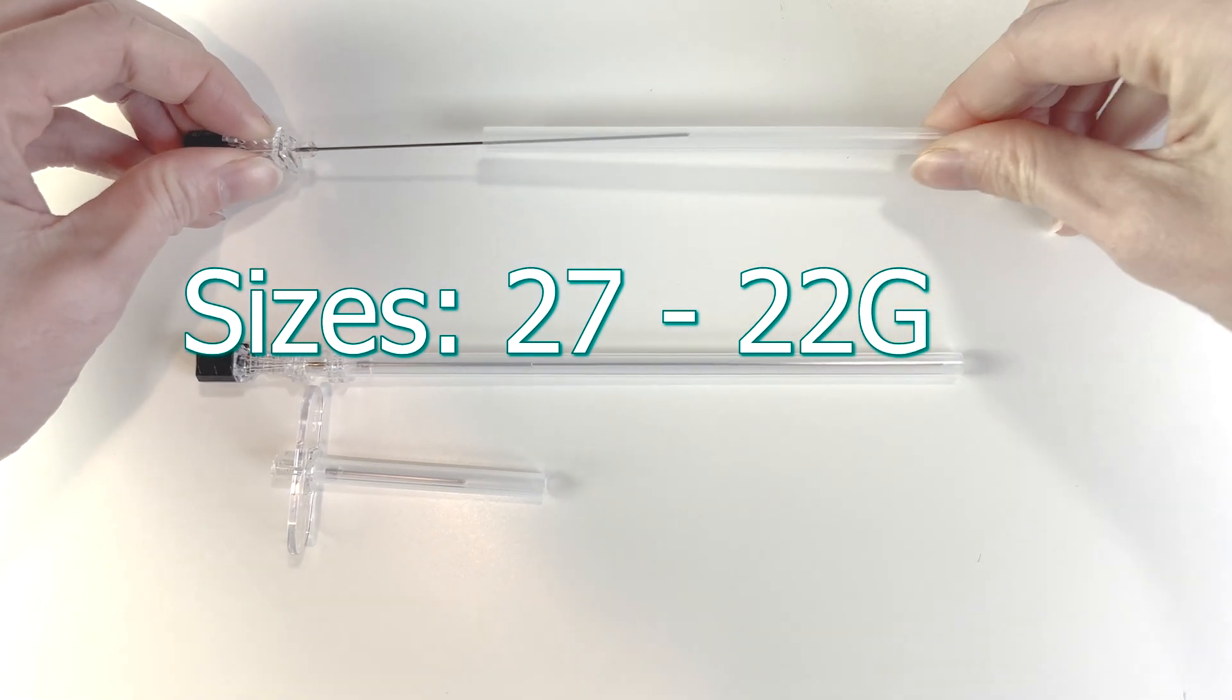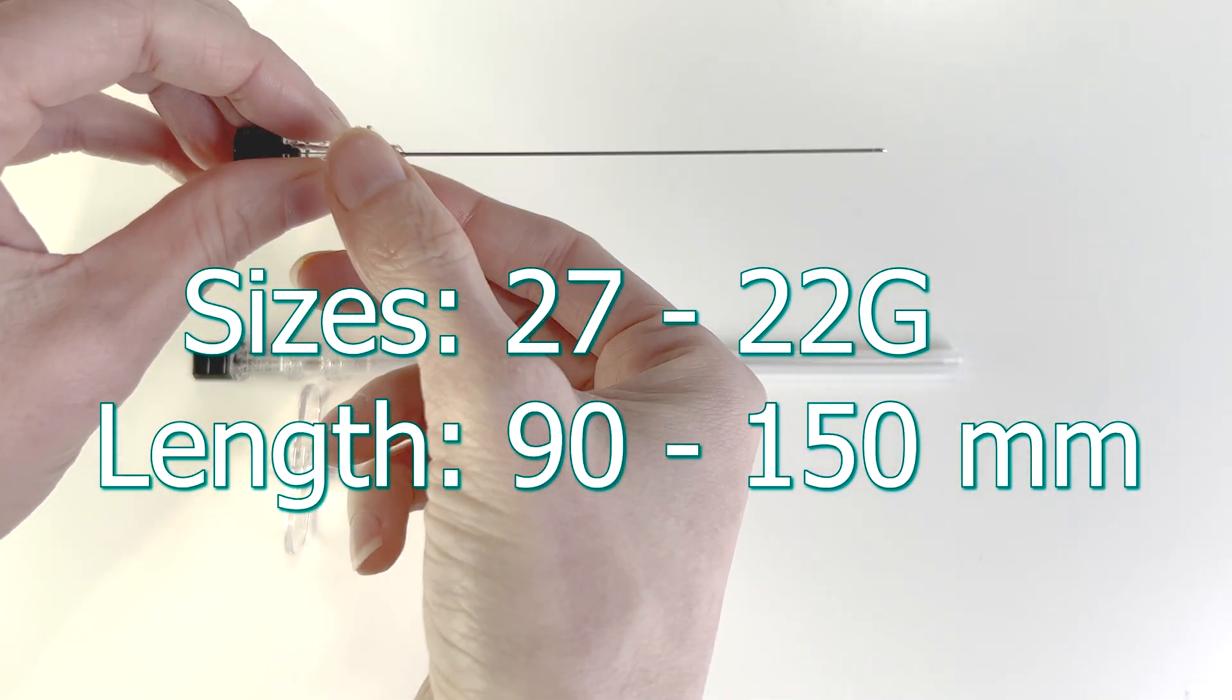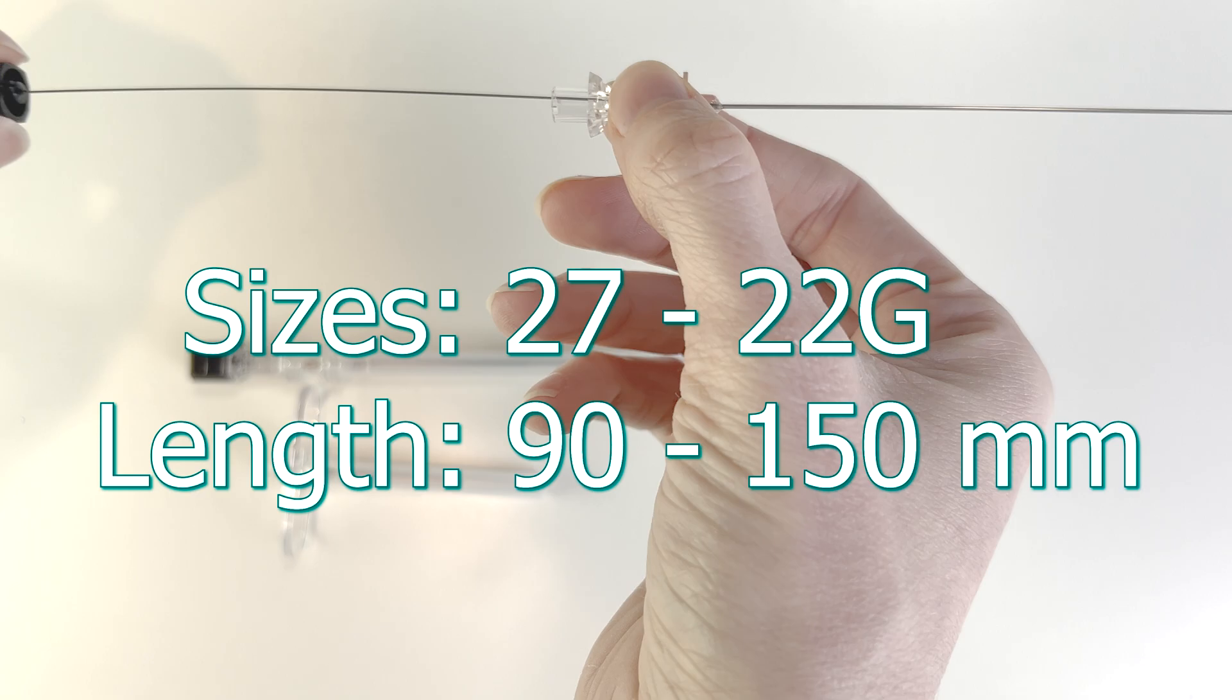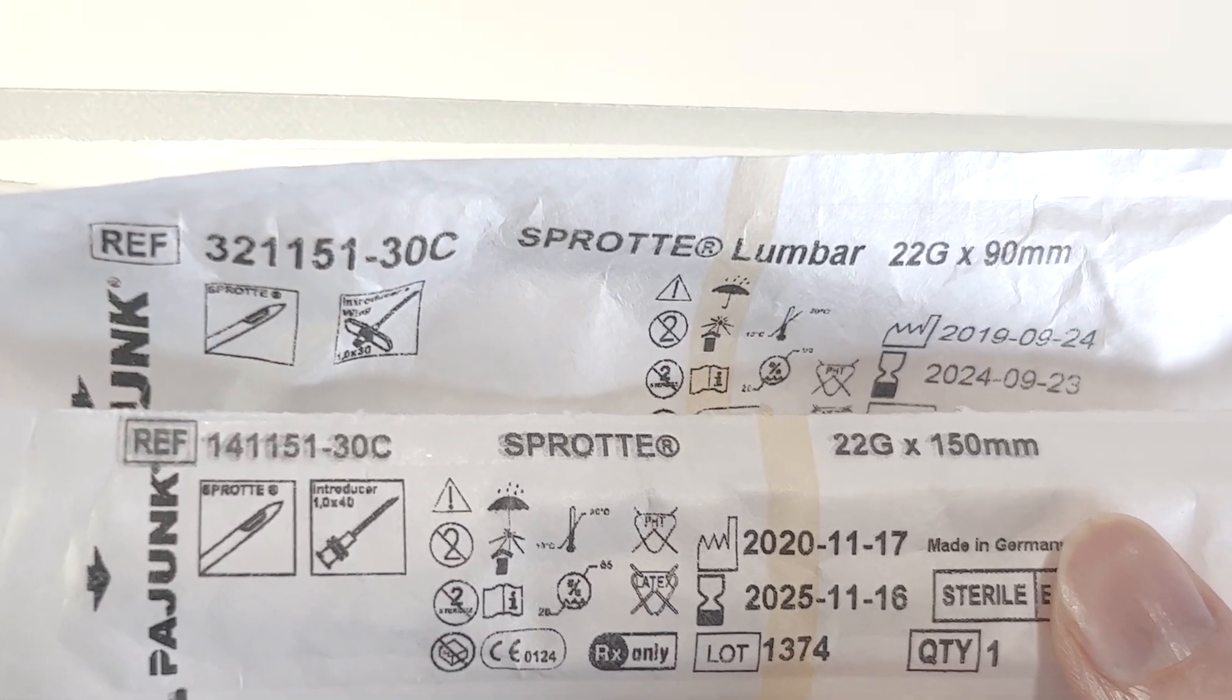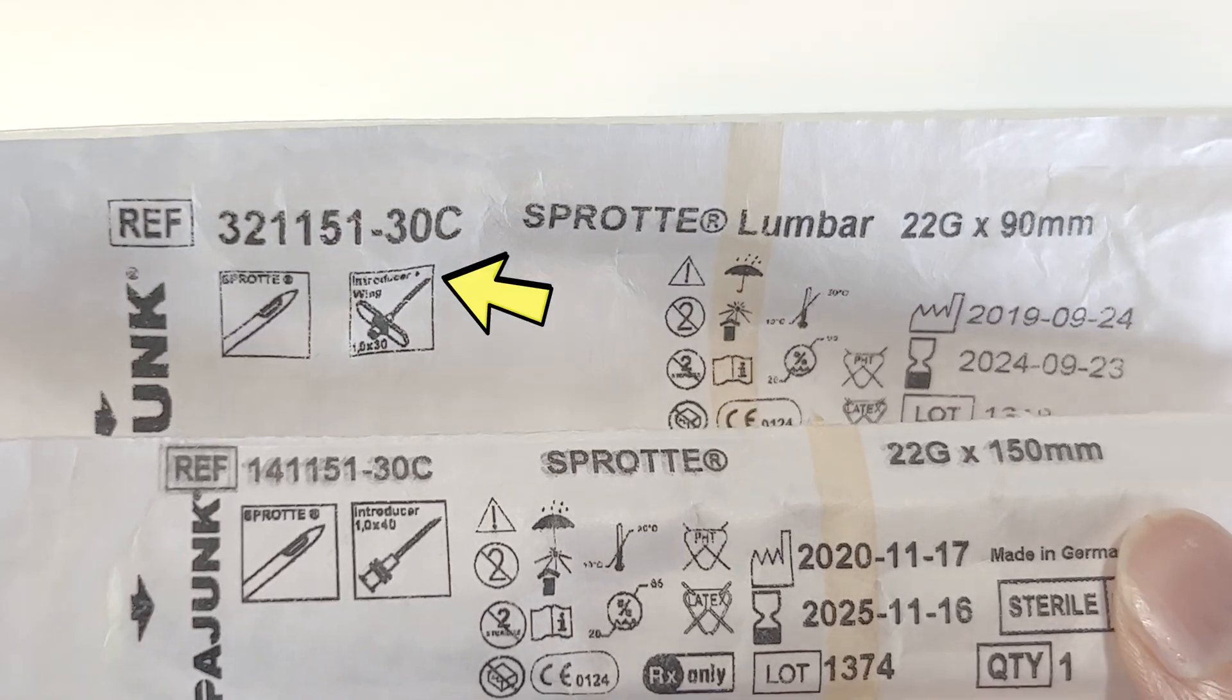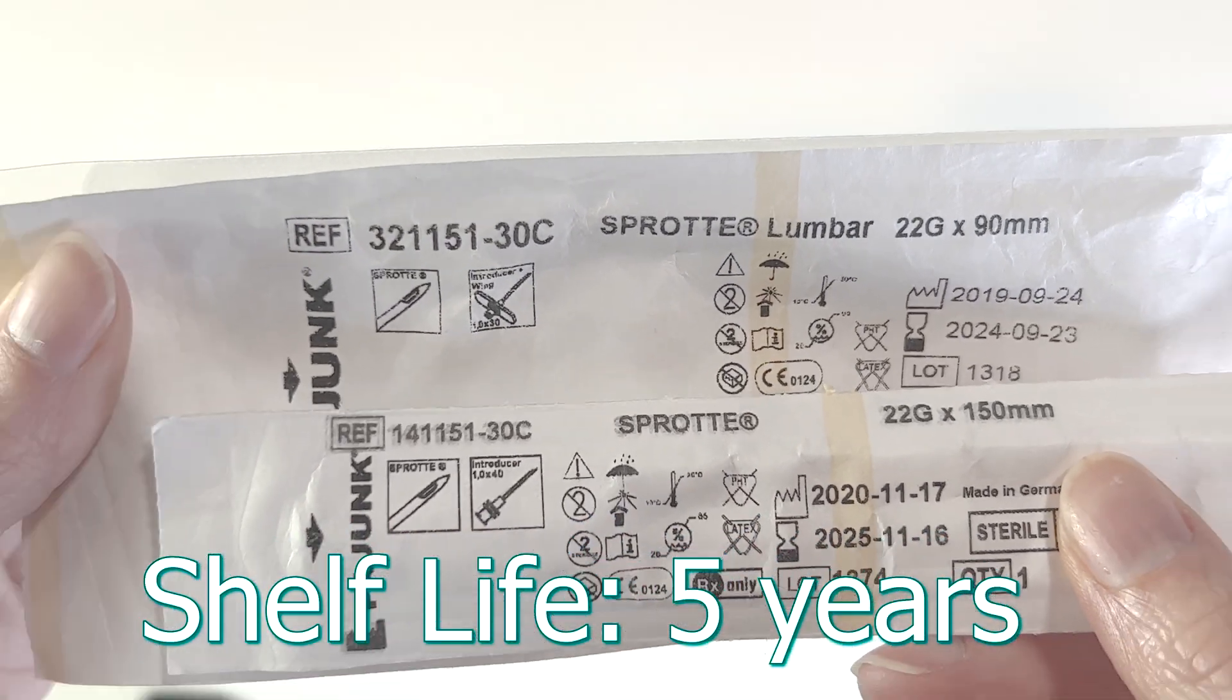It's available in sizes 27 to 22 gauge and lengths from 90 to 150 millimeters. I just want to point out that the Sprott Lumbar branded needles are the ones with the wings. This product has a shelf life of five years.